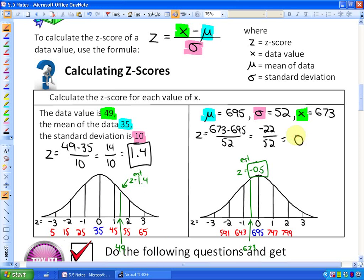So this data value, 673, is 0.42 standard deviations below the mean.